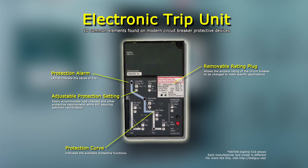Number 4: Protection Alarm. When the protective device detects a fault that causes the breaker to trip, the protection alarm lamp will illuminate to indicate the cause of trip to personnel. Each lamp is strategically located in the related segment of the time current curve depicted on the face of the trip unit.